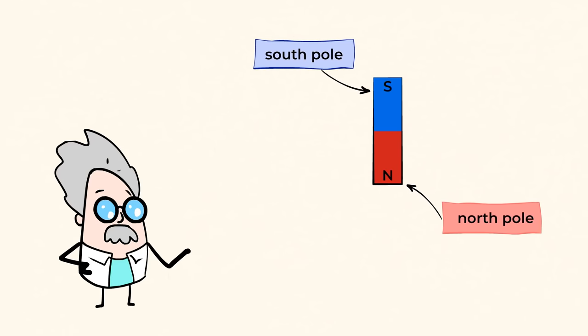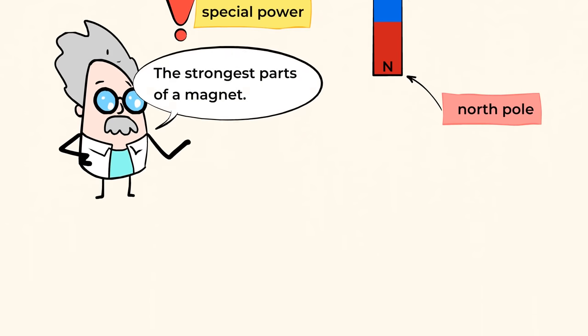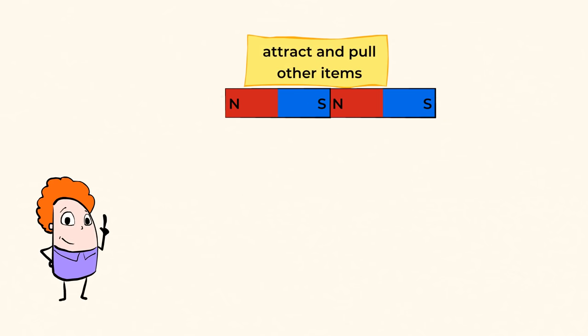Those magnetic poles are so important because they have special powers. They are the strongest parts of the magnet. These strong parts of the magnet can attract and pull other items.